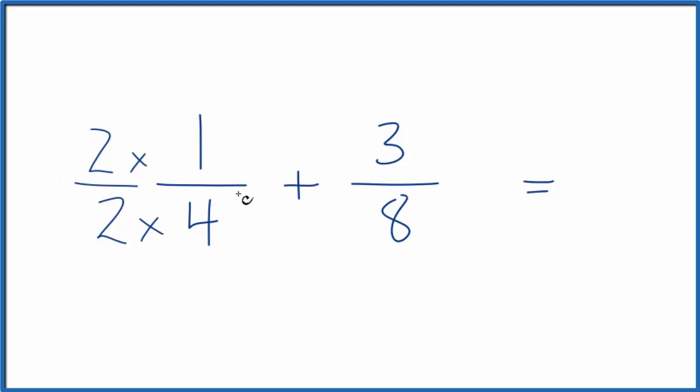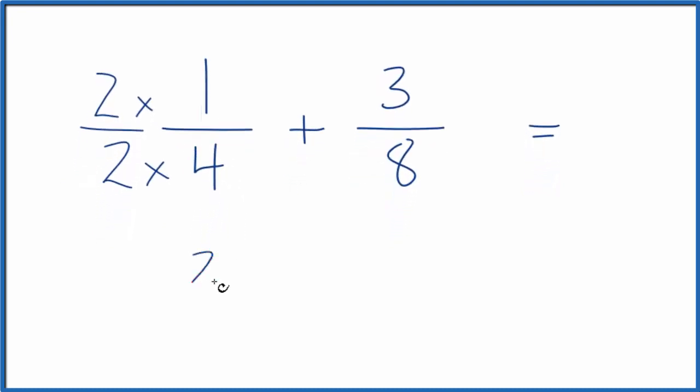I'm not changing the value, but now 2 times 1, that's 2, 2 times 4 is 8. 1/4 and 2/8, they're equal to the same value, just we have them written differently.